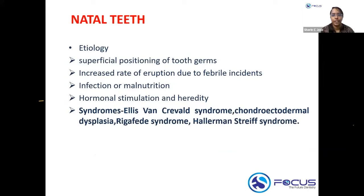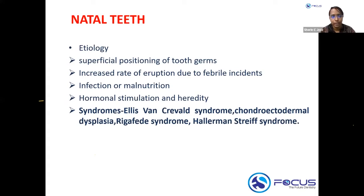The etiology of a natal tooth may be due to a superficially positioned tooth germ, an increased rate of eruption due to a febrile incident, or associated with infection or malnutrition. It may also be associated with syndromes — and the syndrome names are very important. The syndromes associated with natal tooth are: Ellis-van Creveld syndrome, chondroectodermal dysplasia, Riga-Fede syndrome, and Hallermann-Streiff syndrome.